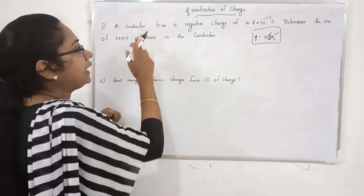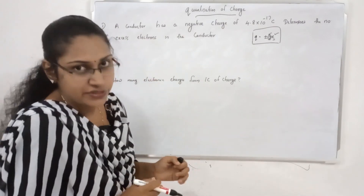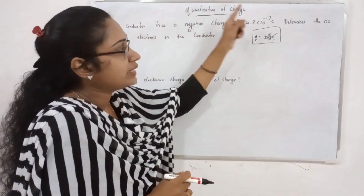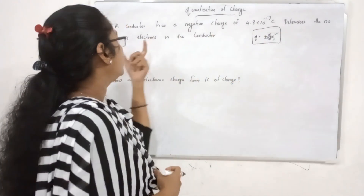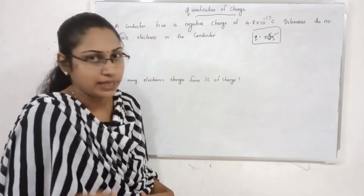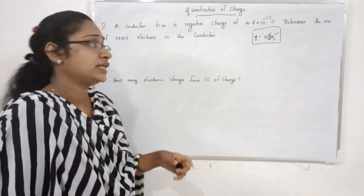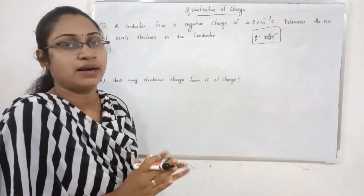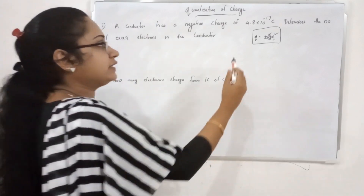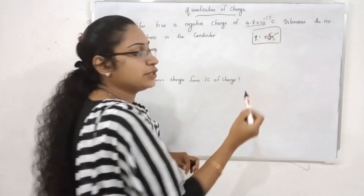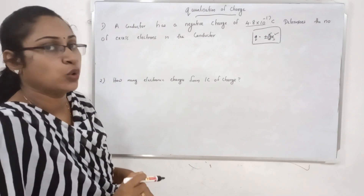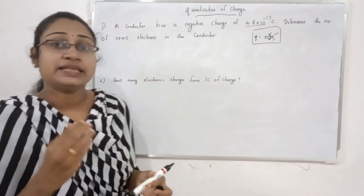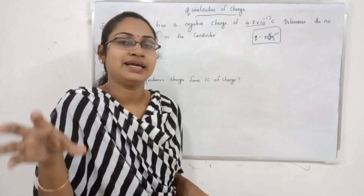Question number one: A conductor has a negative charge of 4.8 × 10⁻¹⁷ coulombs. Determine the number of excess electrons in the conductor. A conductor has a negative charge of 4.8 × 10⁻¹⁷. How much is the excess electron in the conductor?